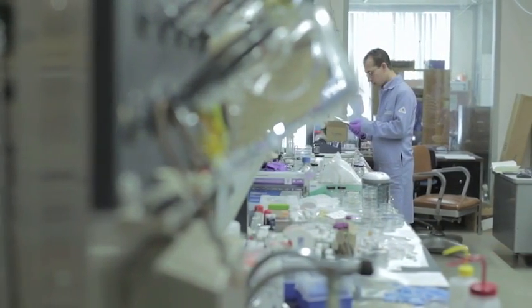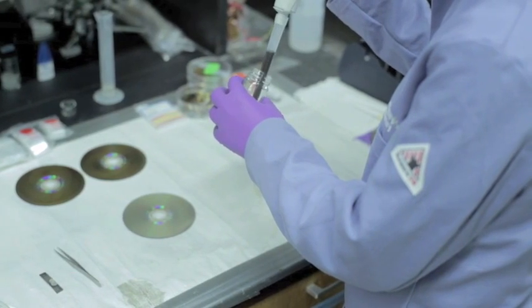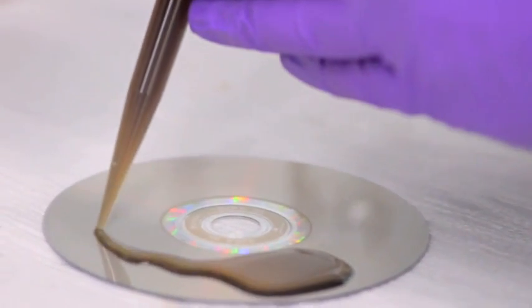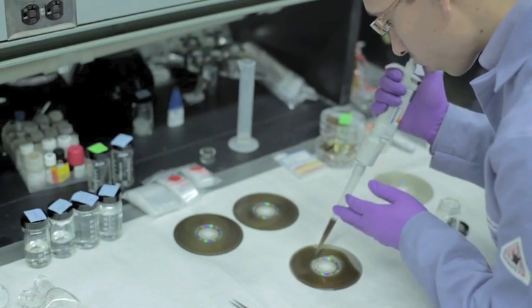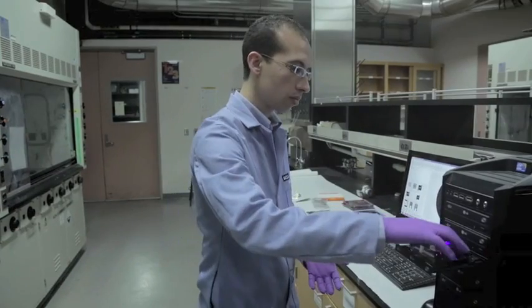We start with graphite oxide, which is a water-dispersible material. We then coat it onto sheets of plastic. We hit it with a light from a laser. It deoxygenates and turns it into graphene.